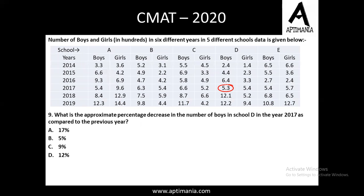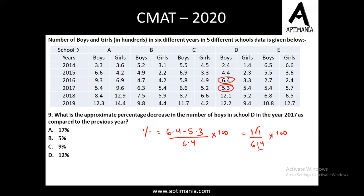The number of boys in school D in 2017 is 5.3, compared to 6.4 in the previous year. The decrement is 6.4 − 5.3 = 1.1. To calculate the percentage, we compare with the previous year: (1.1 / 6.4) × 100 = 11/64 × 100. If it were 11/66 that would be 1/6 = 16.66%, so it will be slightly greater than 16.66%. Going by the options and since we need an approximate answer, the correct option is 17%. For question number 9, option A, 17%, is the correct answer.